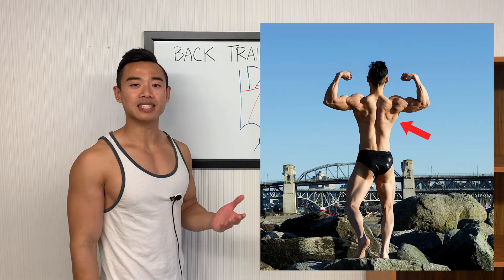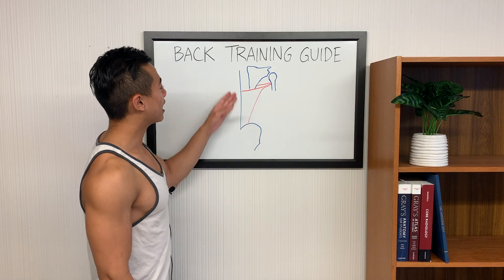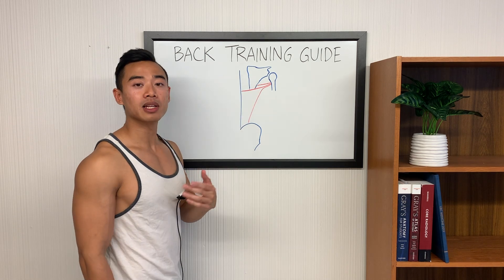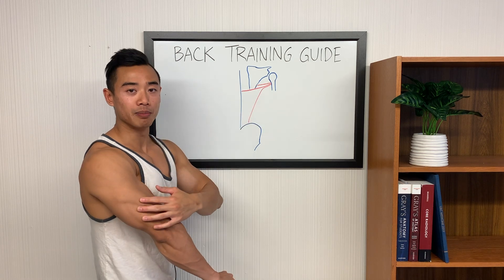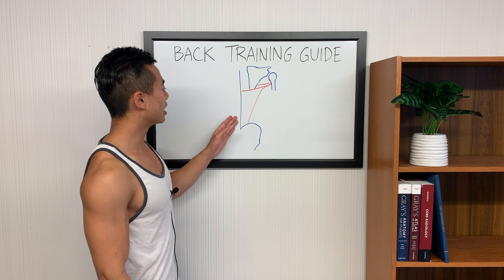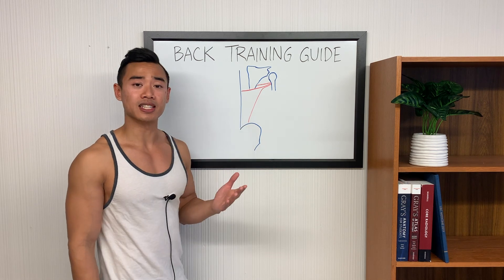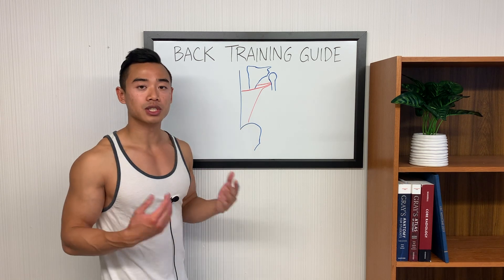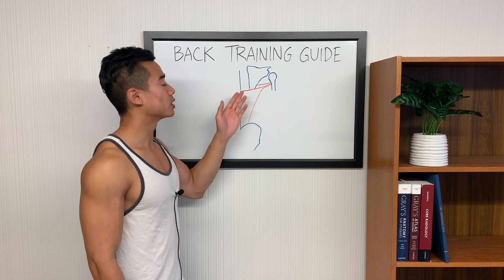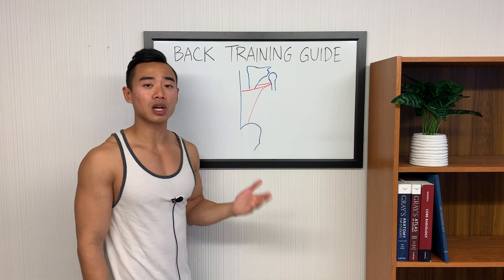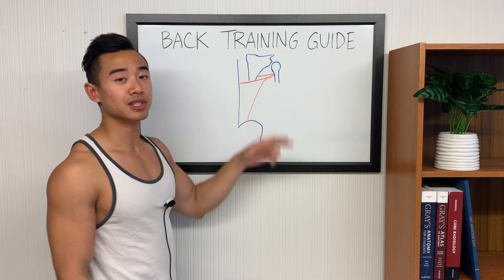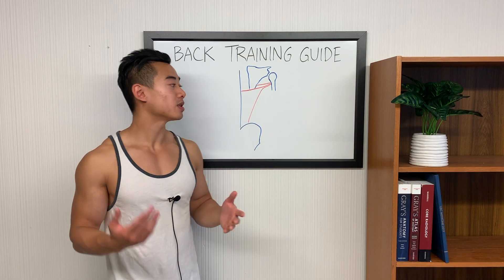Let's start off by talking about the anatomy of the lats and teres major. Here's a little diagram that I just drew. This straight line represents your spine, this is your pelvis or your hip bone, up here we've got your scapula or your shoulder blade, and this is your humerus or your arm bone. The lat, or latissimus dorsi muscle, originates from a few spots: part of your thoracic and lumbar spine, part of your lower back fascia which is just connective tissue, your iliac crest which is the top of your hip bone, parts that attach at the lower end of your scapula, and some of your lower ribs. Then the lat wraps around and attaches at your proximal humerus. The teres major is a little helper muscle up top that attaches at the lower end of your scapula and also attaches on the humerus.